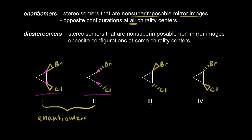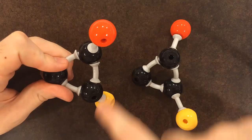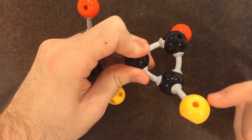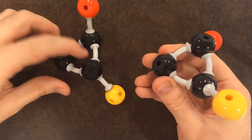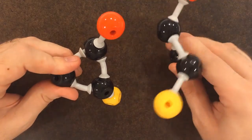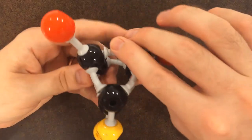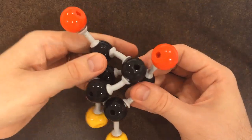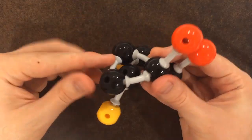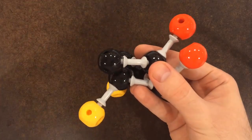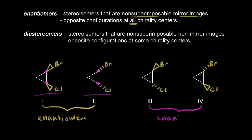Now let's look at the relationship between stereoisomers three and four. On the left is stereoisomer three with bromine up and chlorine down; on the right is four with bromine down and chlorine up. Rotating the one on the right, it's easy to see these are mirror images of each other, and they are non-superimposable. If you put the chlorines on top of each other, the bromines don't line up, and vice versa. These are enantiomers.